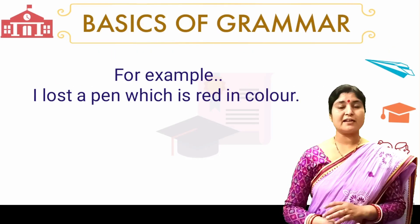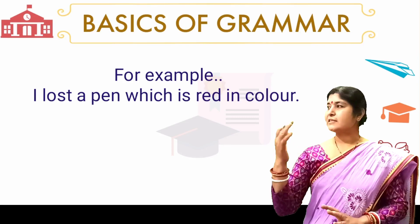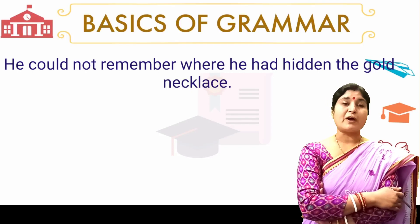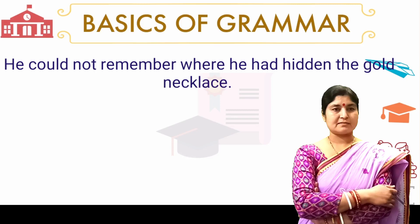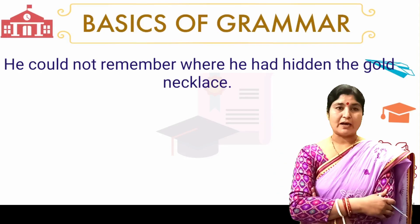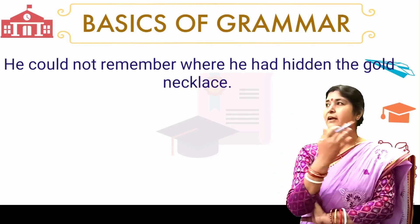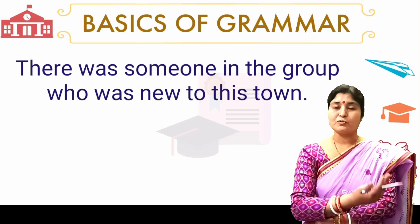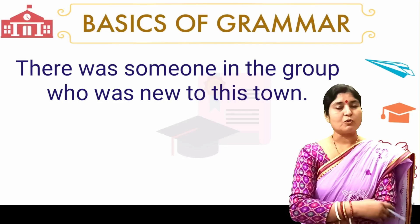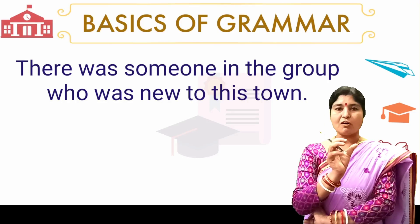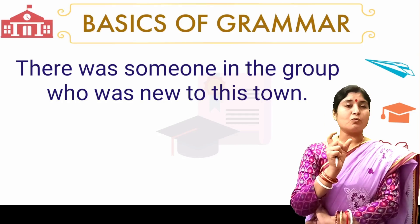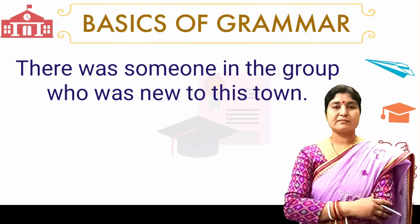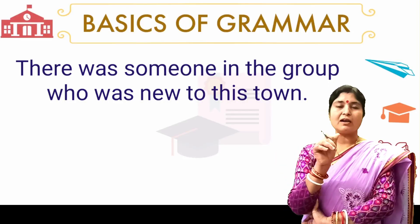For example: 'I lost a pen which is red in color.' Or we can say, 'He could not remember where he had hidden the gold necklace.' Another example: 'There was someone in the group who was new to this town.' So these all are examples — 'who was new to this town,' 'where he had hidden the gold necklace,' 'which is red in color.'